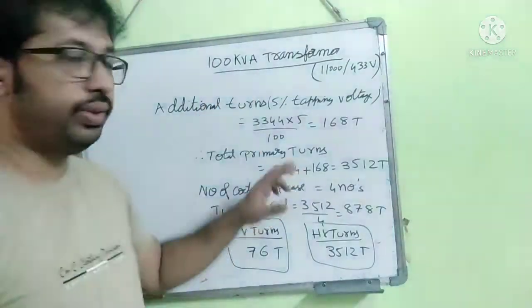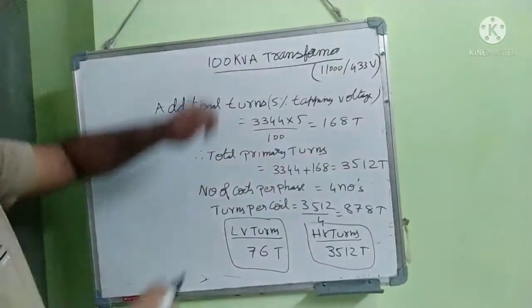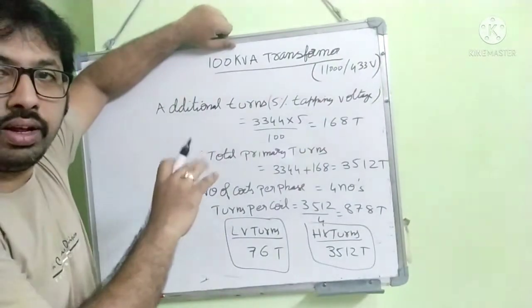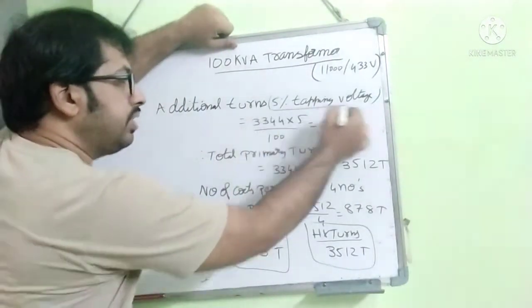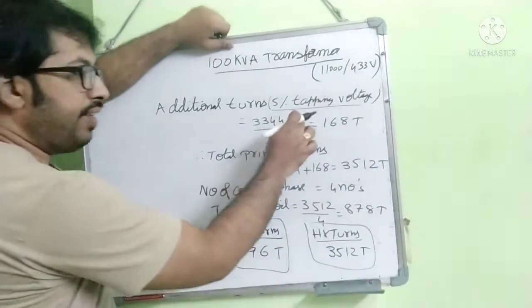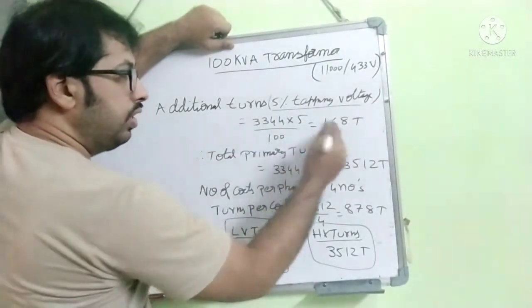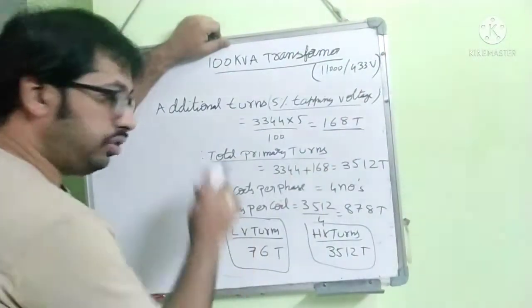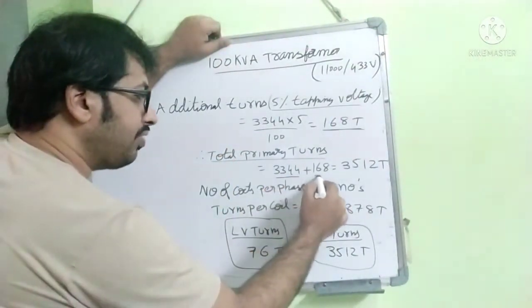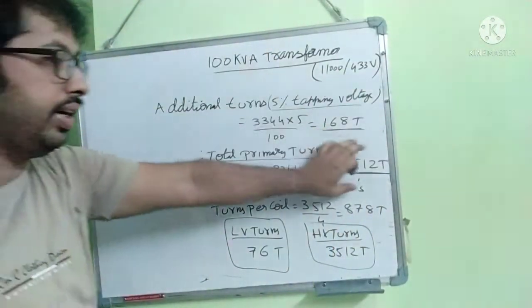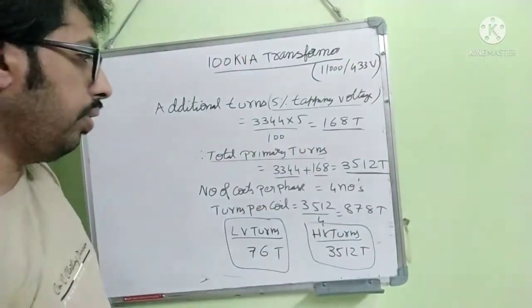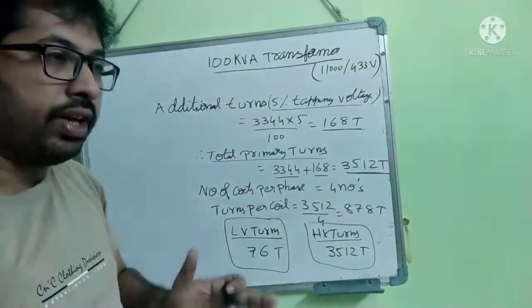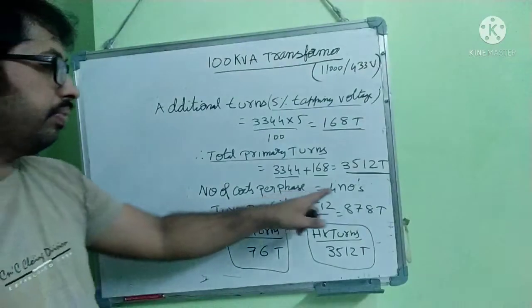Now we will calculate the additional turns which is 5% tapping voltage. This is given in specifications. What are the turns we got? 3344 turns, total turns without tapping voltage. So for that, since we have given 5% tapping voltage, into 5 by 100. So total extra turns we have to place for tappings is 168 more turns. So total number of turns, primary coil turns, HV winding primary, 3344 plus 168 turns, 3512 turns, total HV winding turns.